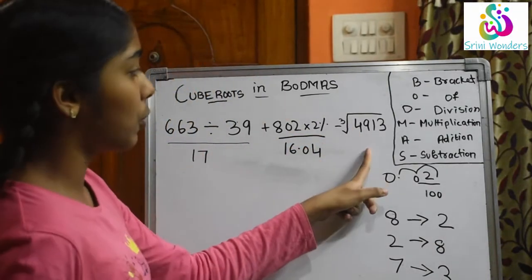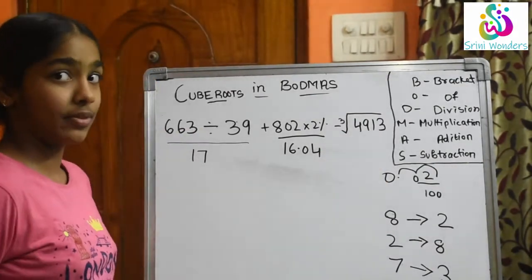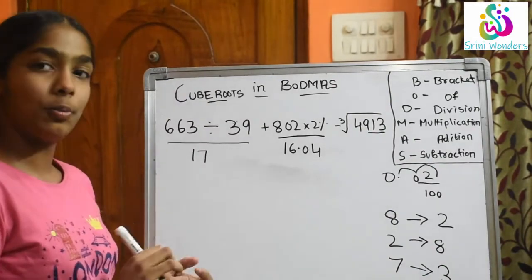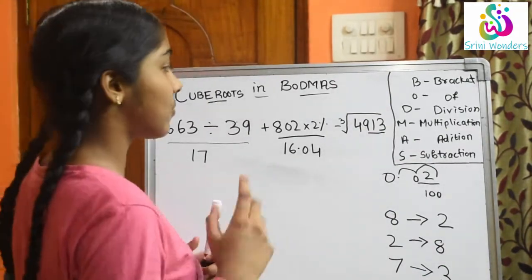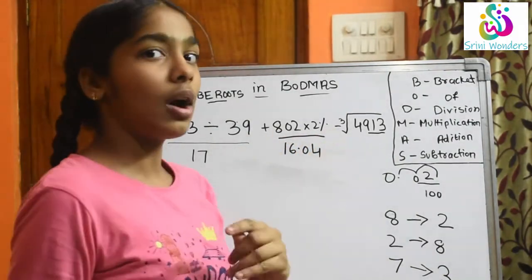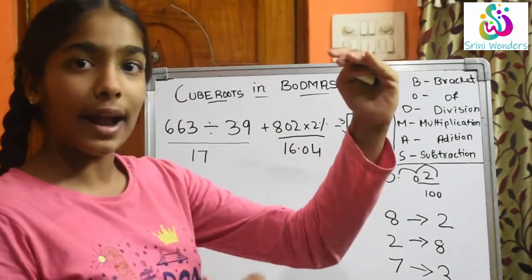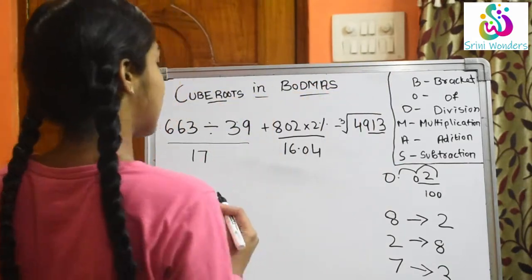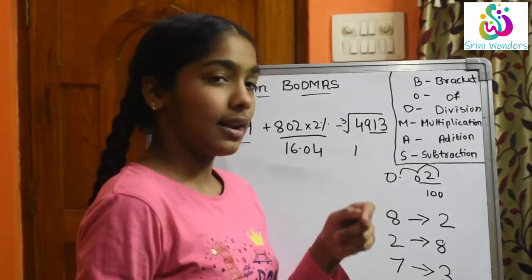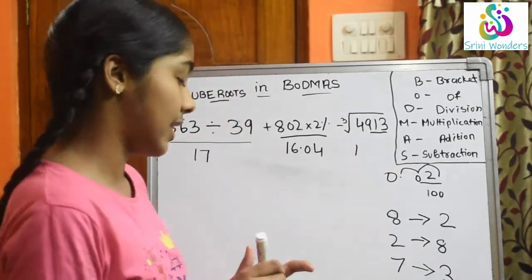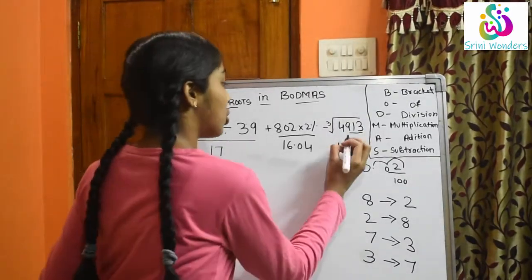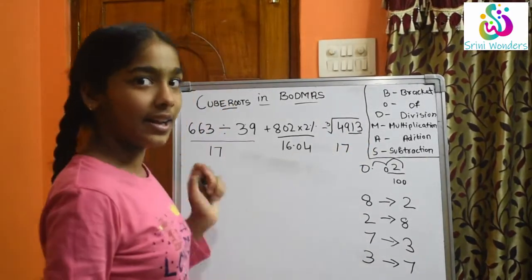Now we take the cube root of 4913. We leave the last 3 digits because cube means 3. We get 4 remaining — it falls in the range of 1 and 2, so we take the smaller range which is 1. The last number is 3, and 3 means we write 7. So the cube root of 4913 is 17.